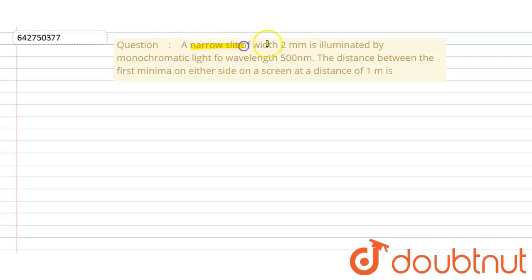Hello my dear students. In that numerical a narrow slit of width 2 millimeter is given with a wavelength of 500 nanometer. He says that the distance between the first minima on either side on a screen at a distance of 1 meter.